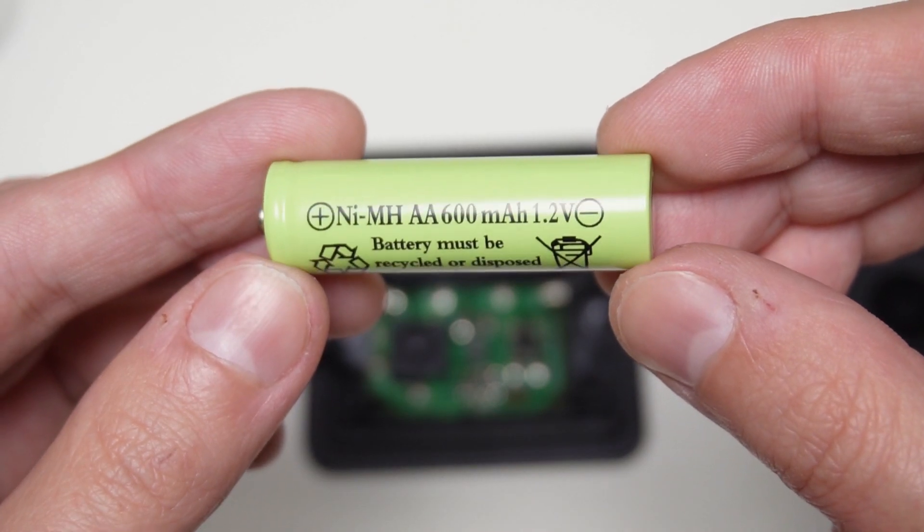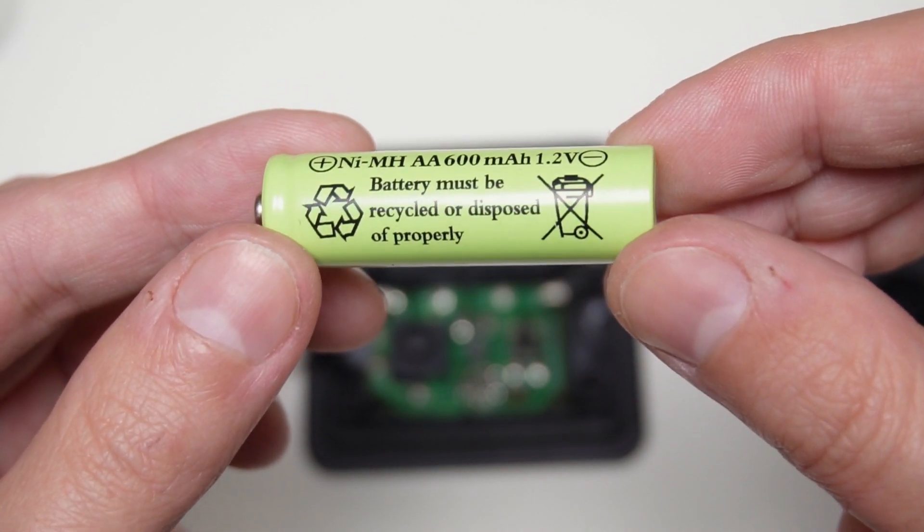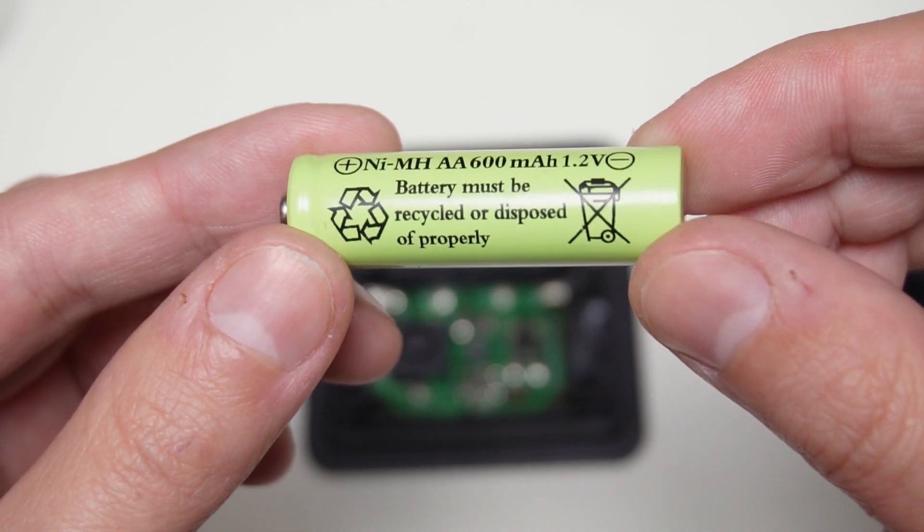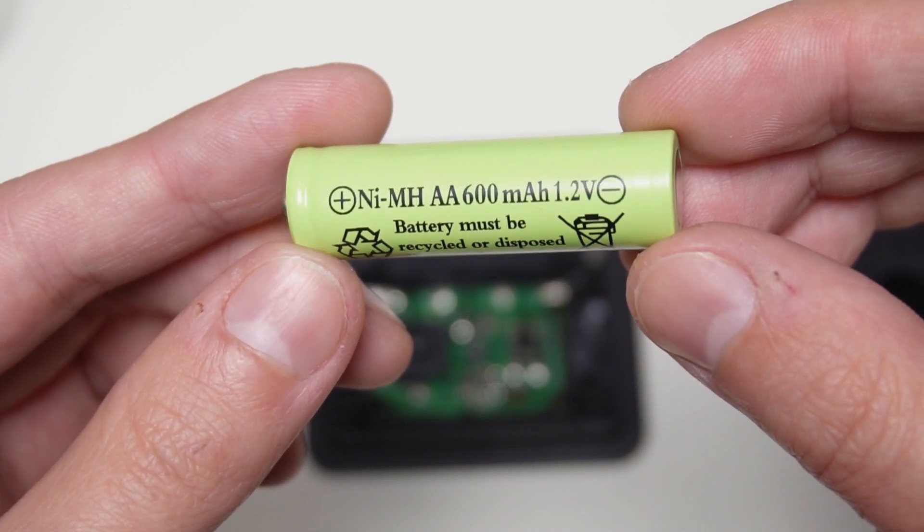The mAh rating is the battery storage capacity for electricity. A higher rating means the lights will work for a longer duration but will also require more time to fully charge.